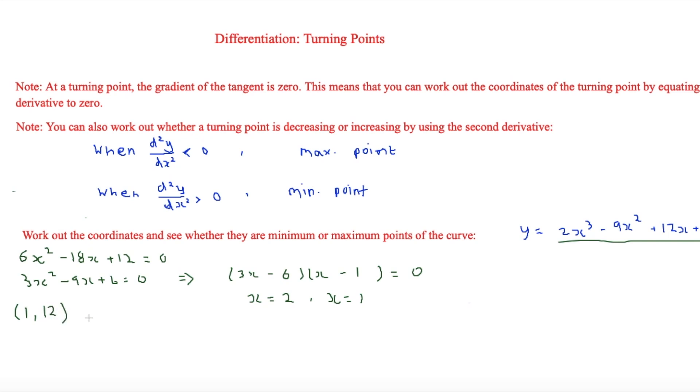And the other coordinate is equal to 2, and then once you sub 2 back into it you'll get 11. So (2, 11). And now we've done the first part, we've done the work out the coordinates part, but now we need to see if they're minimum or maximum.